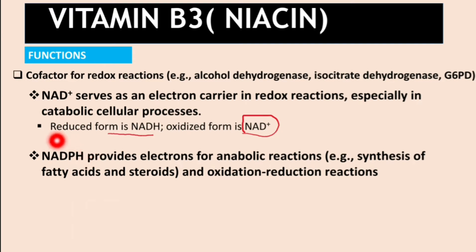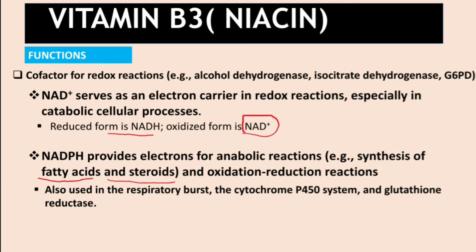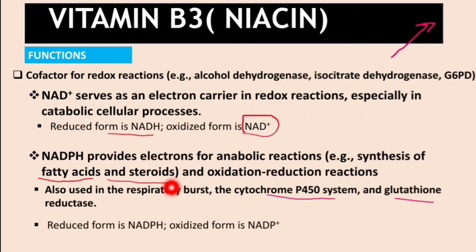NADPH is obtained from the hexose monophosphate shunt, also known as the pentose phosphate pathway. It provides electrons for anabolic reactions such as fatty acid synthesis and steroid synthesis. It is also used in other oxidation-reduction reactions, including the cytochrome P450 system for detoxification in the liver and the glutathione reductase pathway. The reduced form is NADPH and the oxidized form is NADP+.